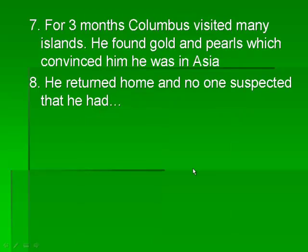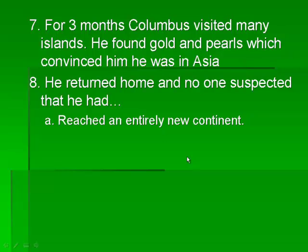So he goes around for three months visiting islands. He found gold and pearls, which is convincing him that he's in Asia. He returns home, and no one suspects that he has reached an entirely new continent. Everybody still thinks he made it to Asia, but really he just landed in the Caribbean.